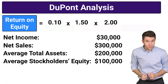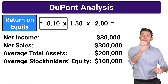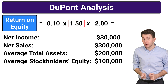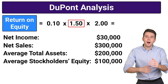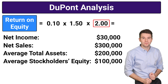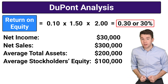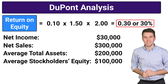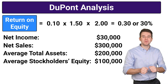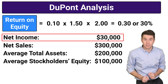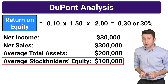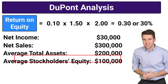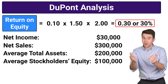Finally, to calculate our return on equity, we can take profit margin of 10%, multiplied by asset turnover of 1.5, multiplied by leverage of 2. This gets us a return on equity of 0.3 or 30%. You could also compute return on equity as net income of $30,000 divided by average stockholders' equity of $100,000 to also get 0.3 or 30%.